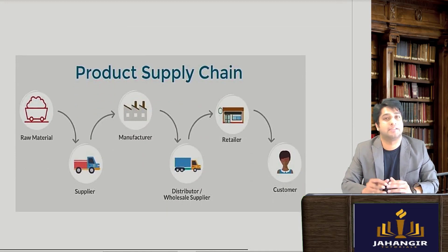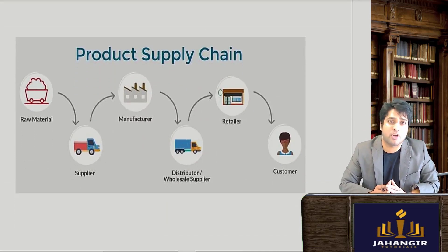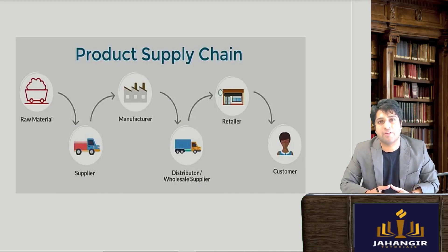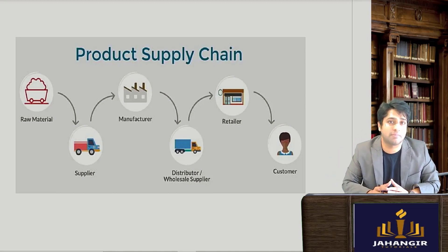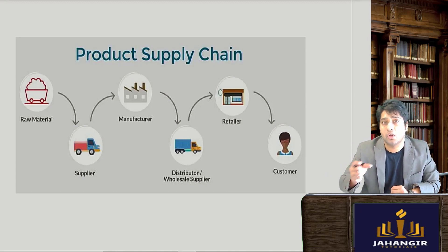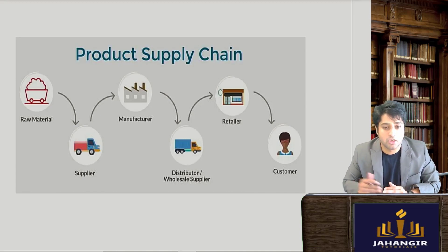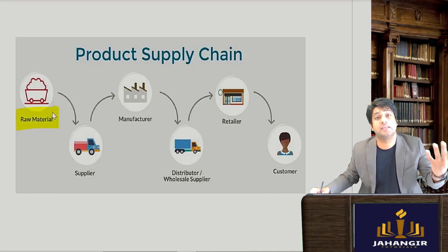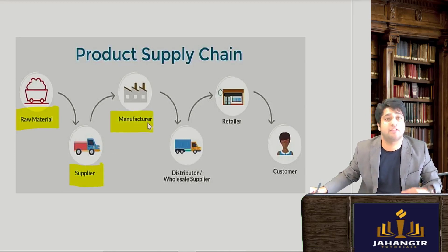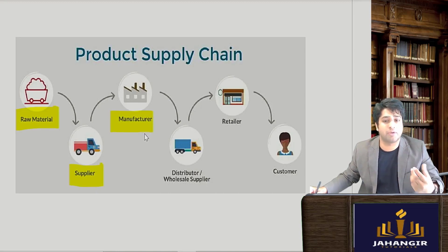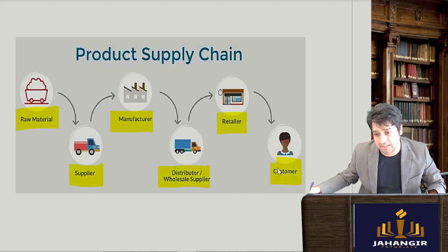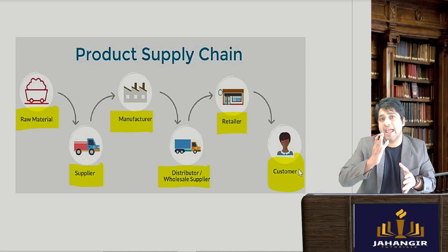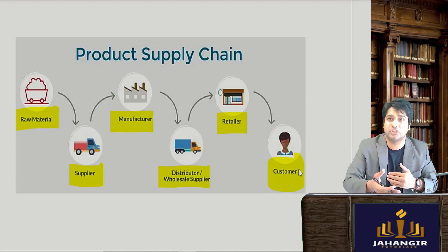Let's begin with simple examples. Have you ever bought anything directly from the manufacturer? Today buyers and customers do not directly buy from manufacturers. There are a lot of intermediaries that come in, each of which makes a profit margin or adds some value to the product. There could be a raw material manufacturer, then a supplier, then a manufacturer, then a wholesaler, then a retailer, and finally the customer. At every stage there is some kind of value addition in the price.